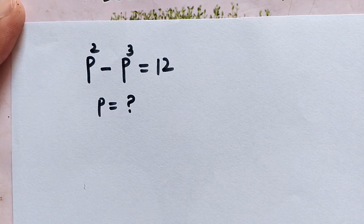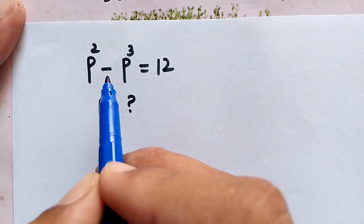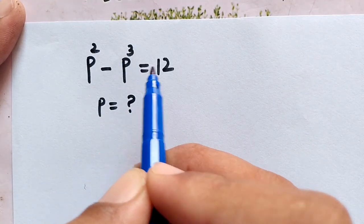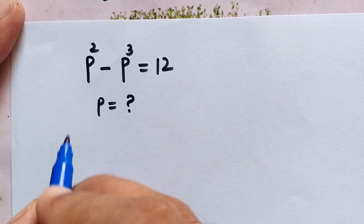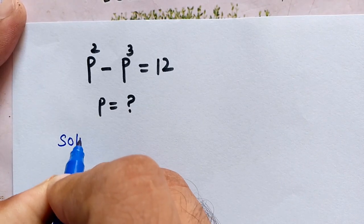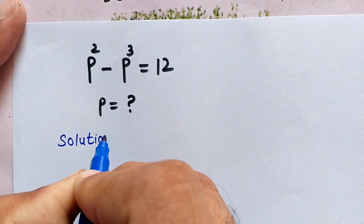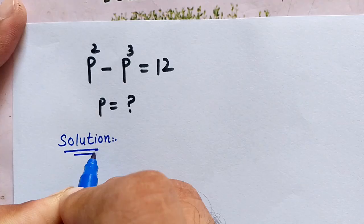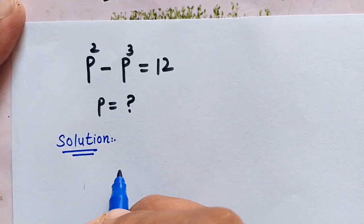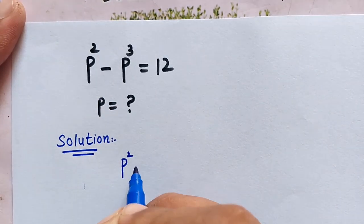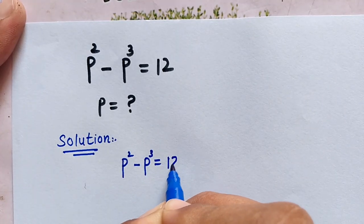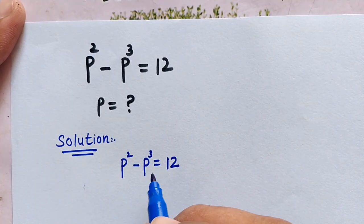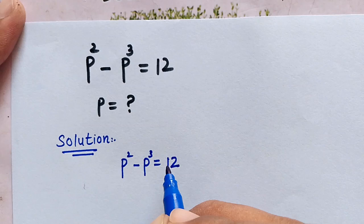Hello, you are welcome. How to solve this interesting math question: p squared minus p to the power of 3 is equal to 12, and we have to find the value of p. So the solution — the question is p squared minus p to the power of 3 is equal to 12.